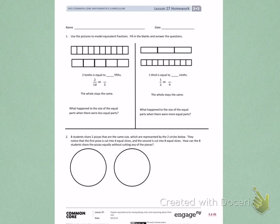This is Module 5, Lesson 27, Homework, Side 1. Today's objective was to explain equivalents by manipulating units and reasoning about their size.